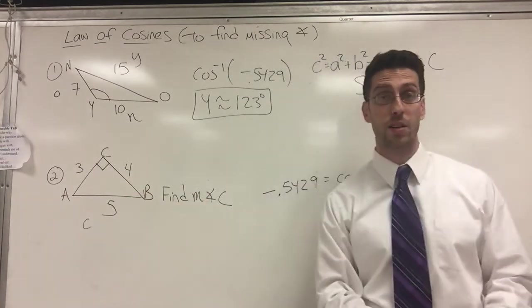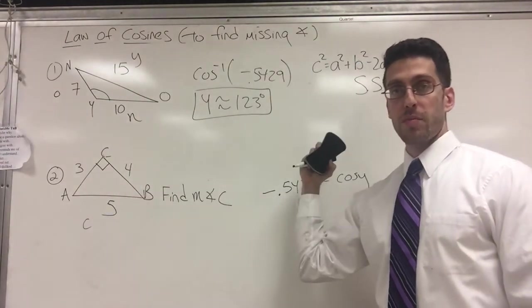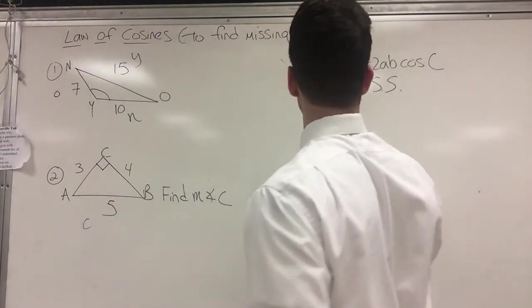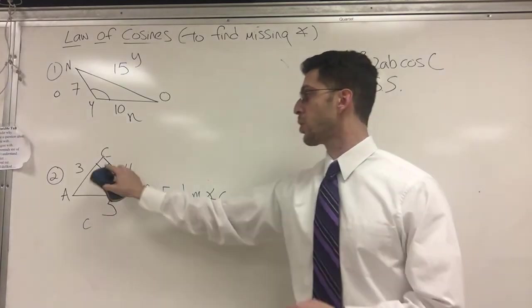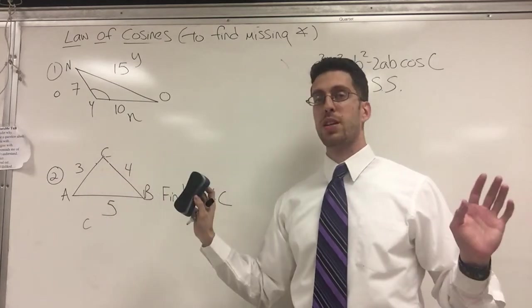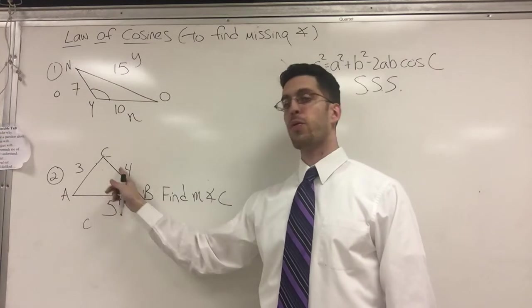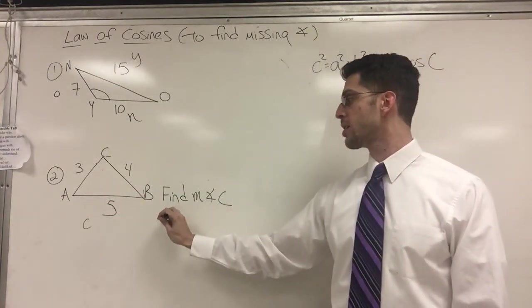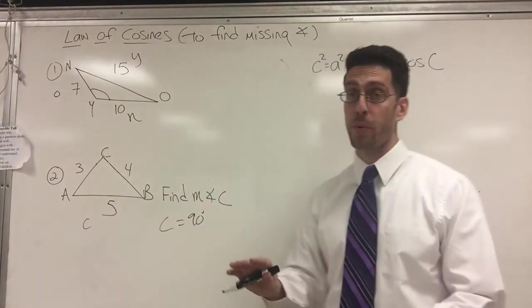Let's see if I can get it done in less than a minute. So this one, I use the ABC on purpose because it matches the ABC. I have side, side, side. So I know I can use the law of cosines to find a missing angle. You should know that because 3, 4, 5 makes it a right triangle. We're done. It's 90 degrees. I found angle C. C equals 90 degrees. I'm done. I told you I could do it in less than a minute, but that's not the point of this video.